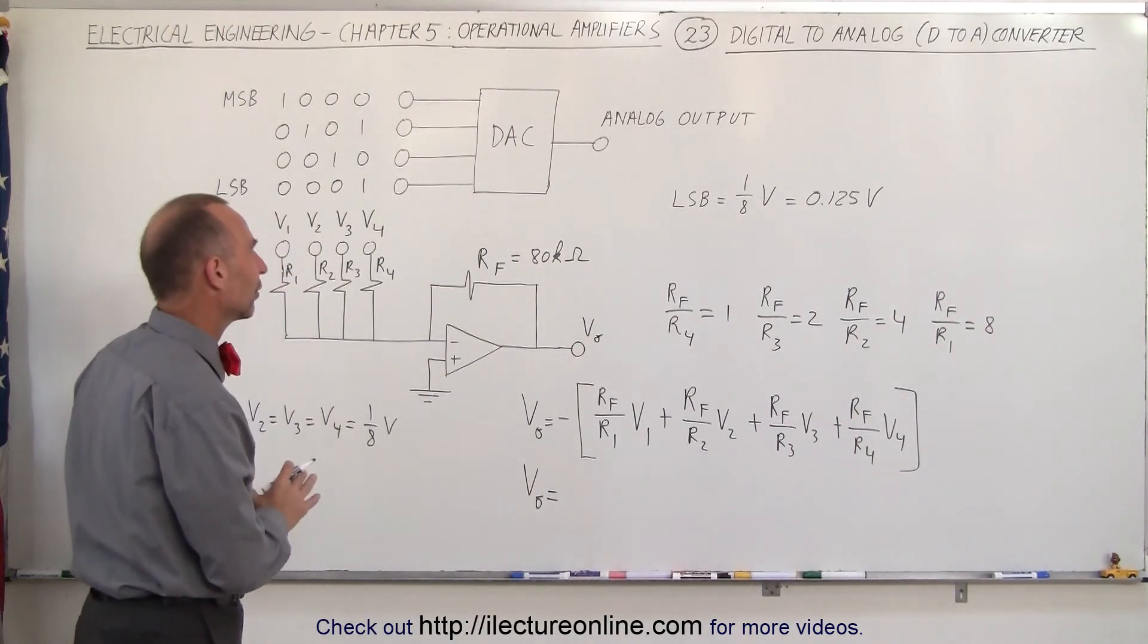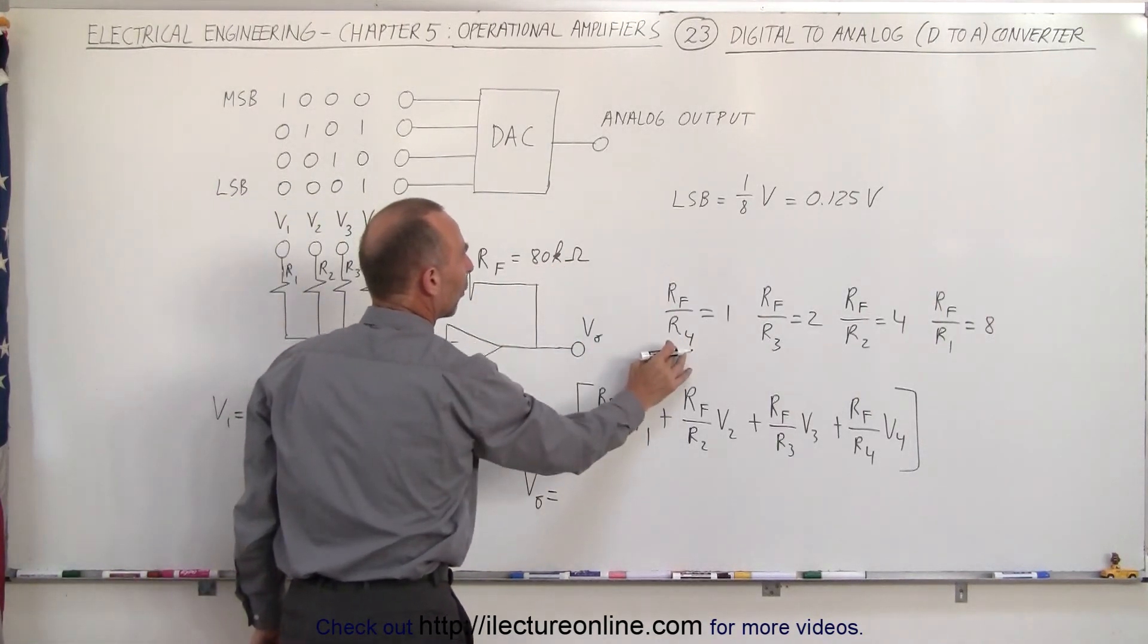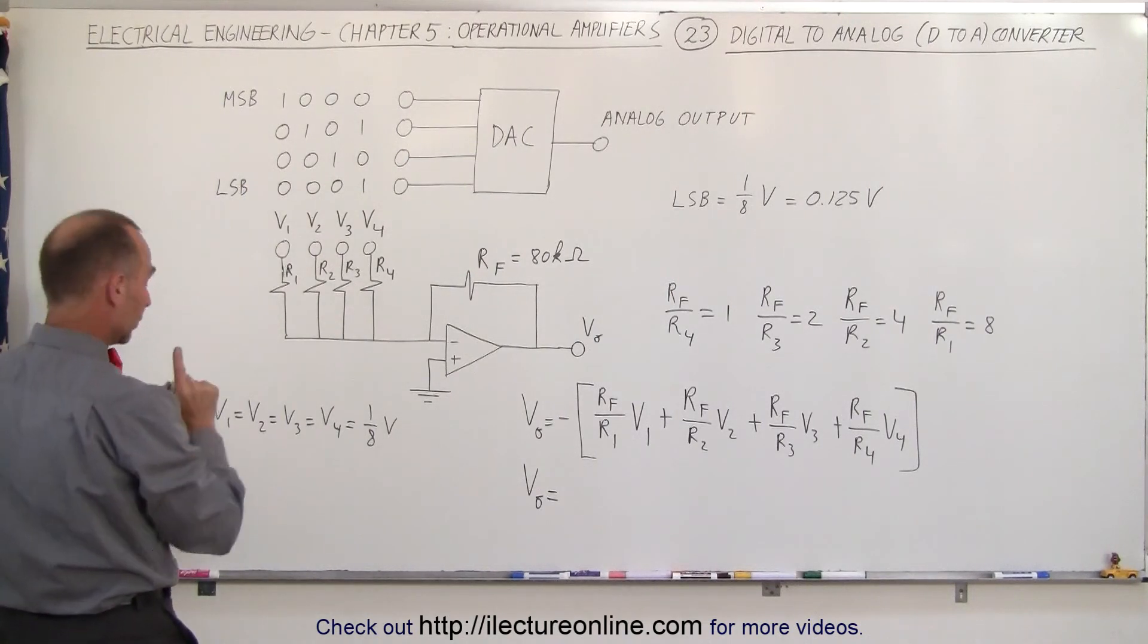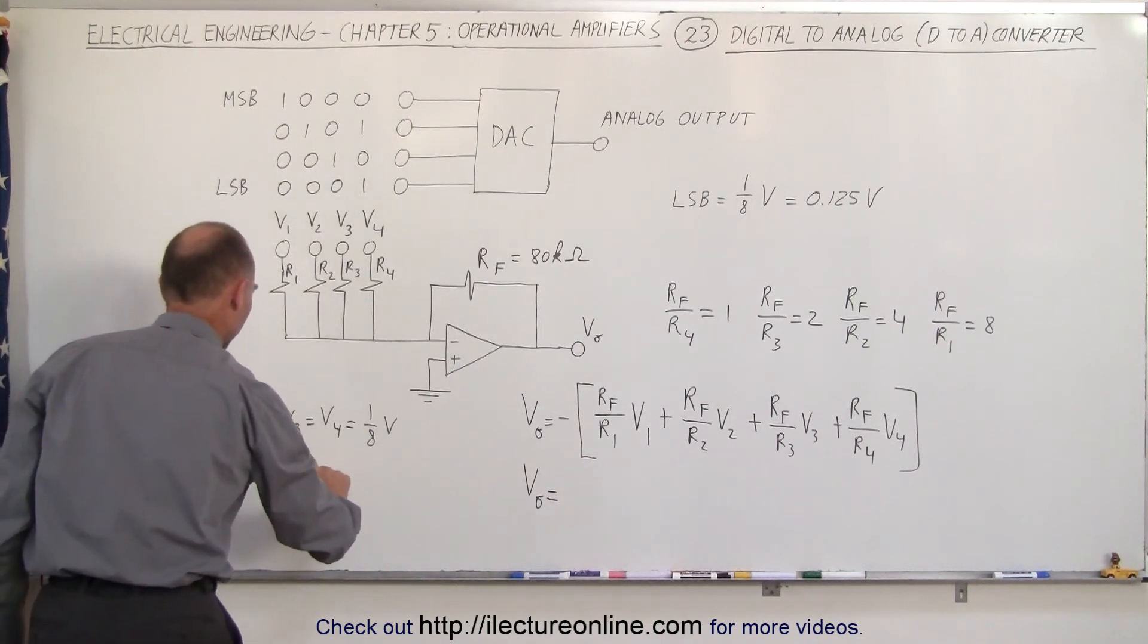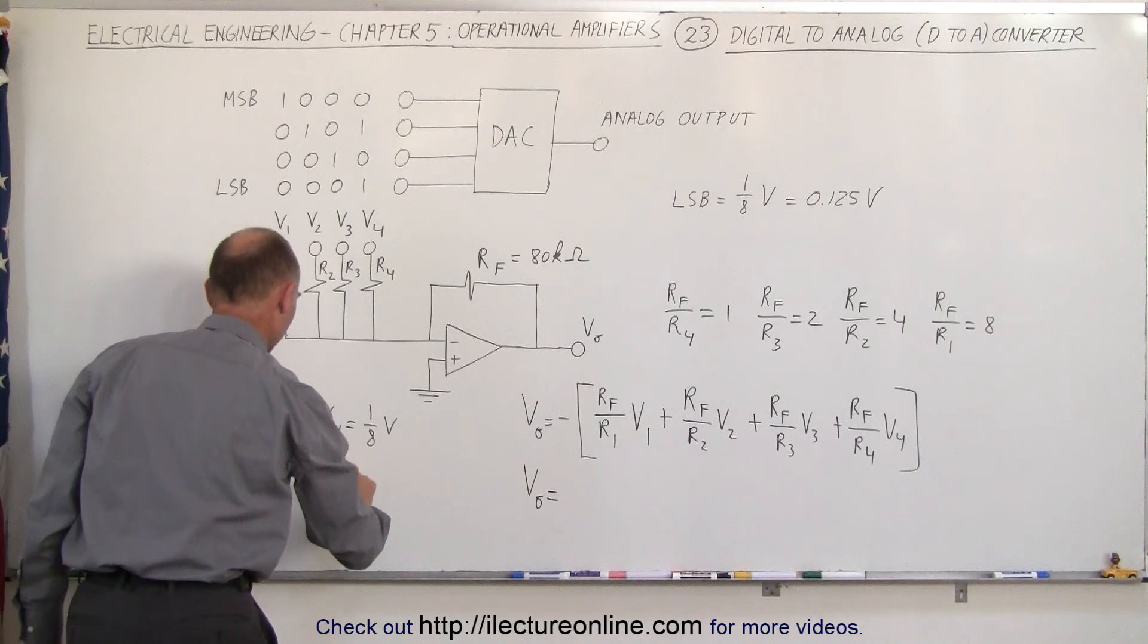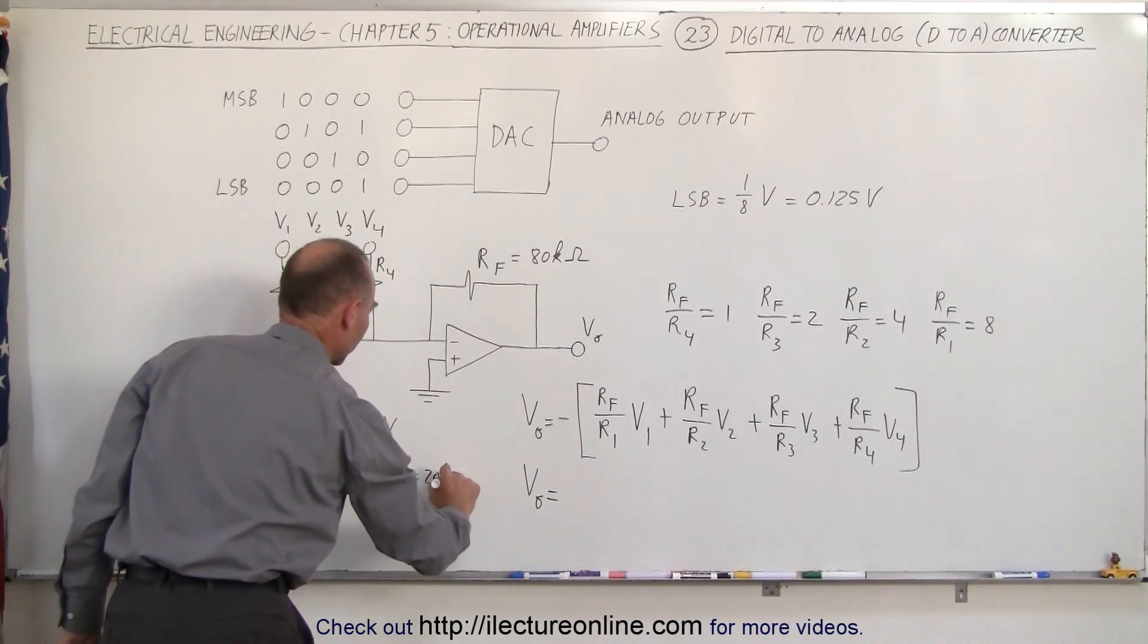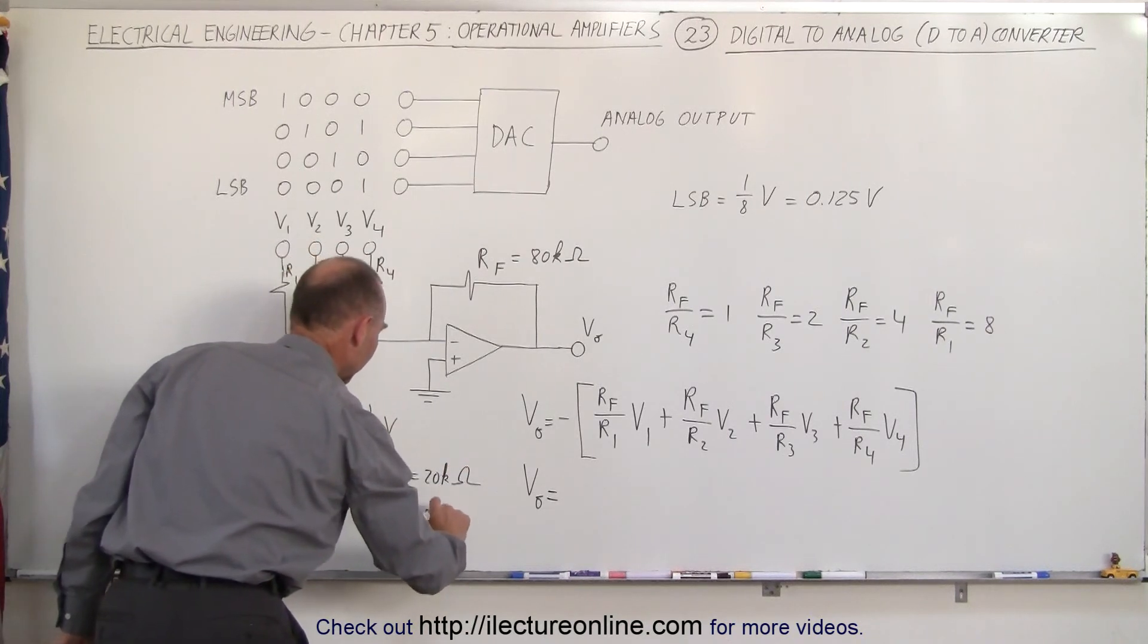Let's plug in some values for this. If this is 80 kiloohms, and we want the ratio to be one to one, that means that R4 should be equal to 80 kiloohms. R3 should be equal to, notice that RF to R3 should be equal to 2, that means R3 should be equal to 40 kiloohms. R2 should therefore equal 20 kiloohms. And finally, R1 should be equal to 10 kiloohms.